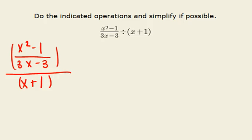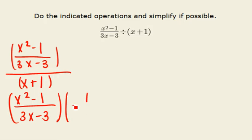Another way we can write this is as x squared minus 1 divided by 3x minus 3 times 1 divided by x plus 1. Writing it this way will make it easier for us to factor things out.